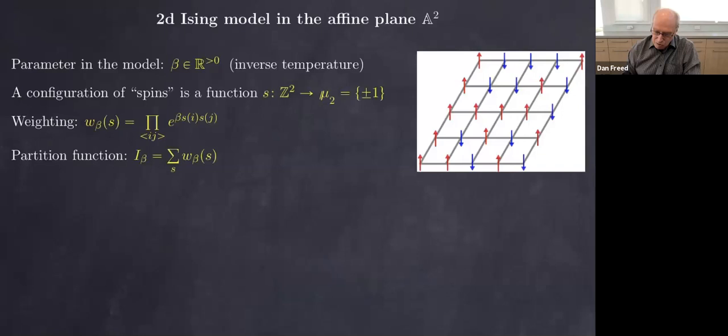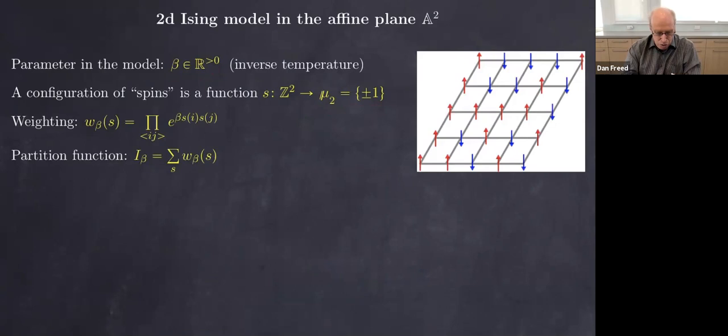There's a parameter here, a positive number beta, which is the inverse temperature. The model concerns a configuration of spins — a spin is an arrow that's either up or down, which we can think of as the cyclic group of order two, plus one and minus one. At each vertex of the lattice we have this spin, this element of this group.